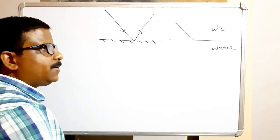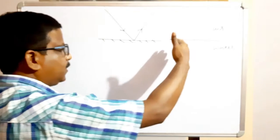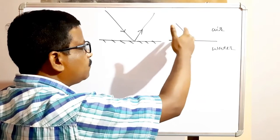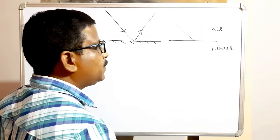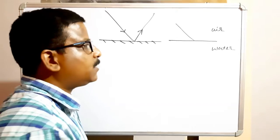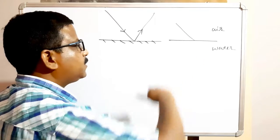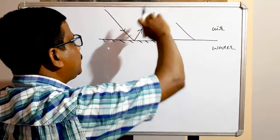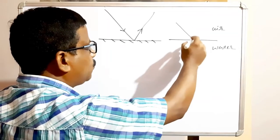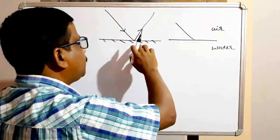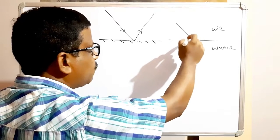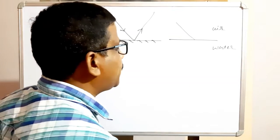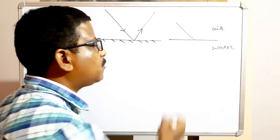What is the cause of this deviation or change in direction? When a ray of light travels from one transparent medium to another transparent medium, there will be a deviation or change in direction. This change in direction of the light ray when it travels from one transparent medium to another transparent medium is called refraction. In refraction, both mediums should be transparent.